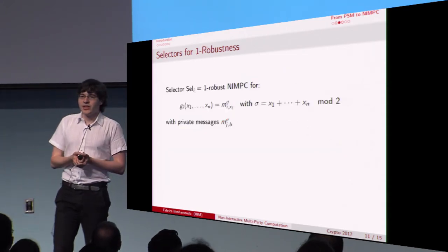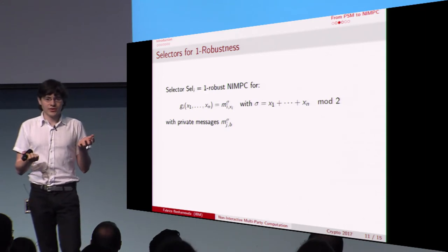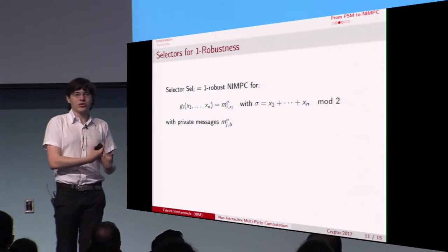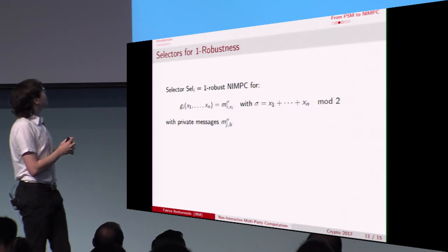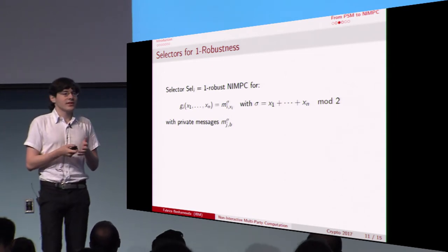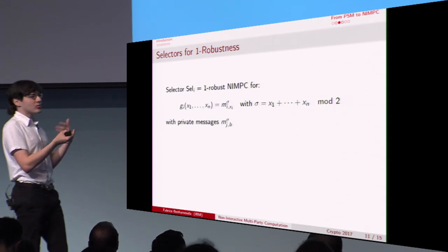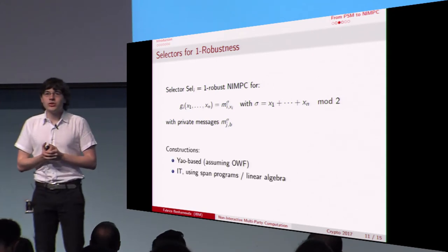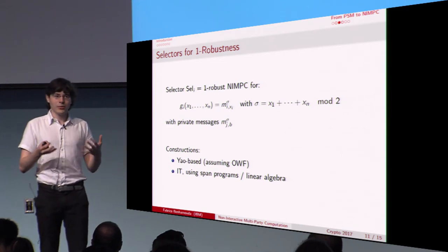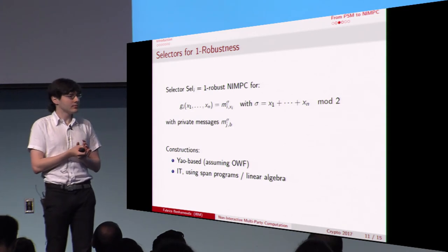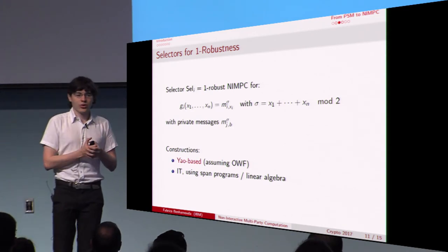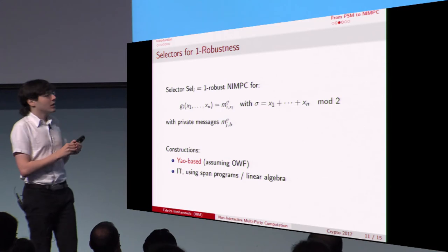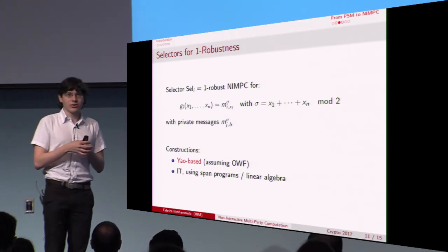It remains to construct these selectors. We need 1-robust NIMPC for the selector function. You might think we've gone nowhere since we wanted to construct 1-robust NIMPC from the start — but the point is that these selectors are really simple functions: they only output a message depending on some linear relations. We show in our paper how to construct these information-theoretically using span programs and linear algebra. In this talk I'll show a simplified garbled-circuit-based construction requiring one-way functions, but keep in mind that our real transformation does not need one-way functions at all.